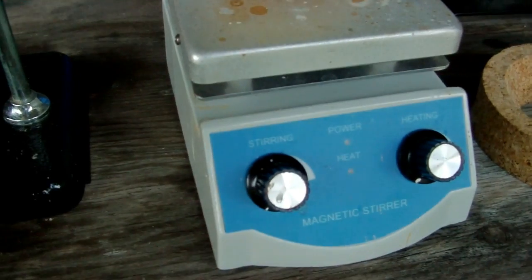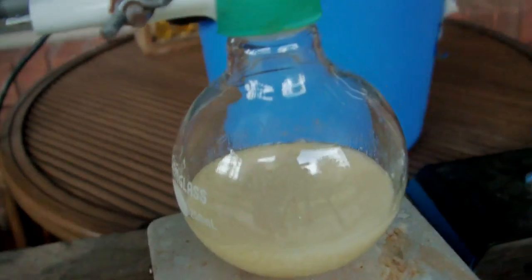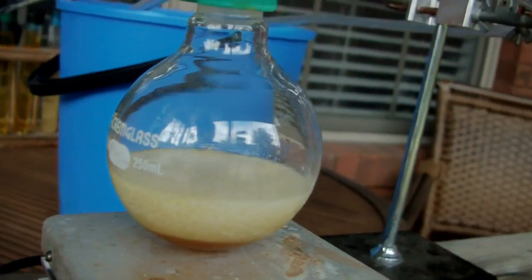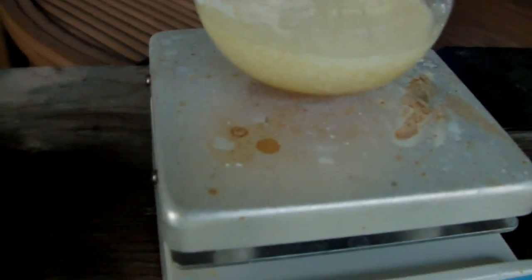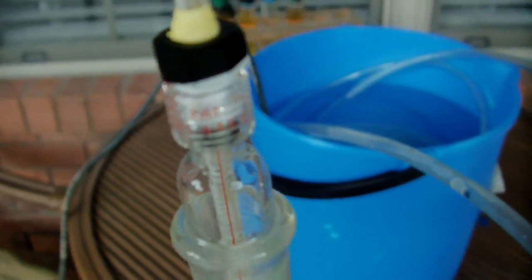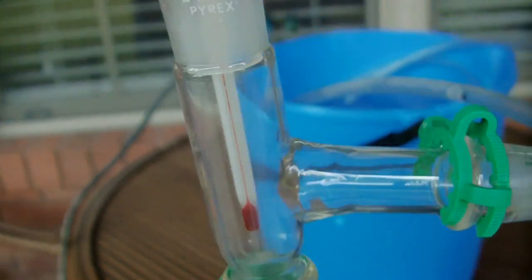It's just a standard, simple distillation. You've got your heat source, your reaction flask, which you can see the sulfuric acid has settled to the bottom, or the ammonium nitrate has floated to the top. This goes up into the still head, which is connected to a thermometer adapter, so I can monitor the temperature of the vapors.